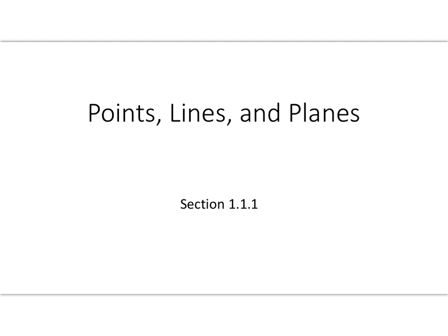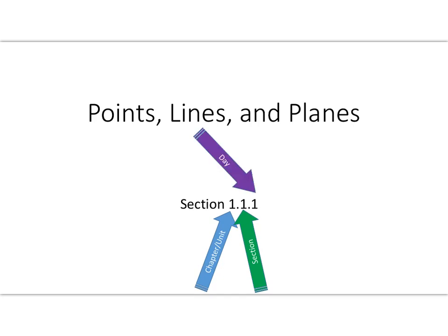Hi there mathematicians, let's get started with our first section of unit one, all about points, lines, and planes. Just to get familiar with the notation: the first digit always represents the chapter and unit number, the next digit always refers to the section within the chapter, and the last digit always refers to the day.